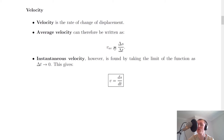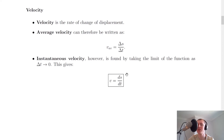Considering what happens as this denominator delta t becomes really small, we can write the instantaneous velocity as ds/dt. That's just saying that the instantaneous velocity is equal to the rate of change of displacement with respect to time. So if you're given a displacement s as a function of time t, you can find the instantaneous velocity by doing the first derivative of that displacement with respect to time.